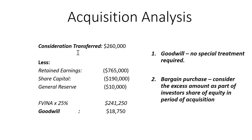We're going to do our acquisition analysis. When we do our acquisition analysis we come up with goodwill, which means no special treatment is required — we don't have to calculate any special amount in our share of equity. We know if it was a bargain purchase we would need to consider that amount as part of our share of equity in the period of acquisition. But since it's goodwill, we don't need to make any adjustments for it.